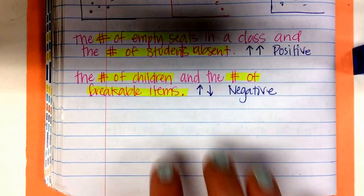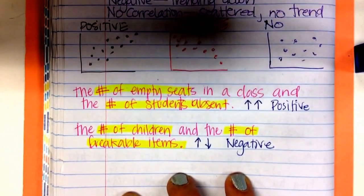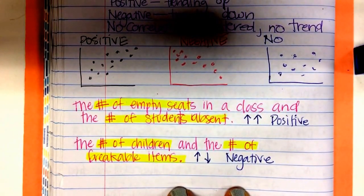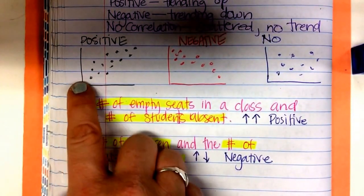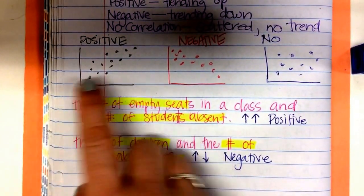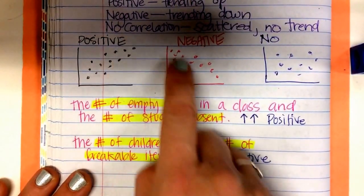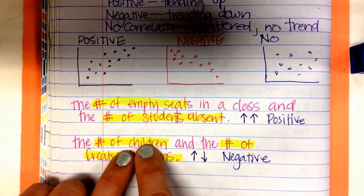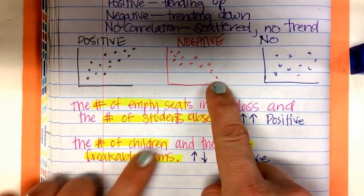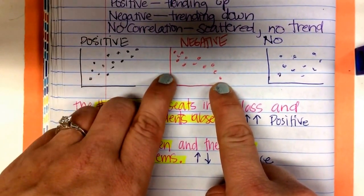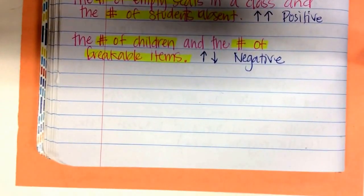Well, Miles, you are very trusting with your items around young children. So, if you look, the number of empty seats, as this increases, so does your Y increase. And if they both increase, it goes up. But if you look here, as the number of young children increases, what happens to my breakable items? They decrease, so it goes down. So let's talk a no correlation.